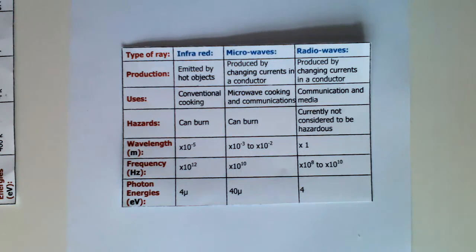And finally, radio waves, with the longest wavelength, produced by changing current in a conductor, communication and media for uses, hazards currently not considered to be hazardous, wavelength times 1, frequency times 10 to the 8th to 2 times 10 to the 10th, and photon energies 4.